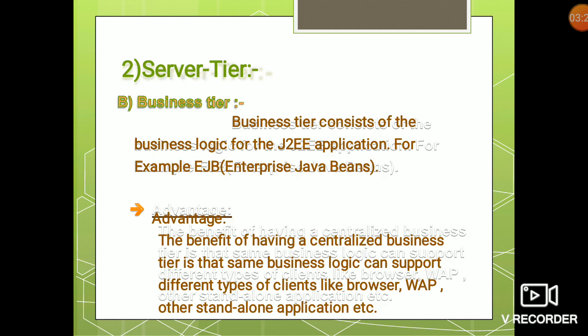The business tier consists of the business logic for the J2EE application, for example Enterprise Java Beans. The advantage of having a centralized business tier is that the same business logic can support different types of clients like browsers, web, and other standalone applications. In other words, whether a user is accessing your application from a browser, web, or any other standalone PC, the logic remains the same.